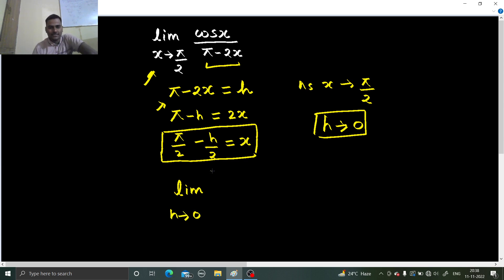Again cos x, so x we can replace by pi by 2 minus h by 2 and in denominator we have pi minus 2x which I can easily replace by h.